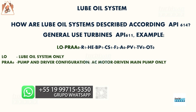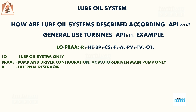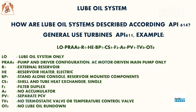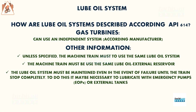A general purpose turbine uses an external reservoir to accumulate the oil returning from the bearings, which is then pumped back through the system. An electric heater is required to maintain the temperature of the lubricating oil when the system is stopped. For this simple machine, there is no need for a rundown tank — I will explain what a rundown tank is later.